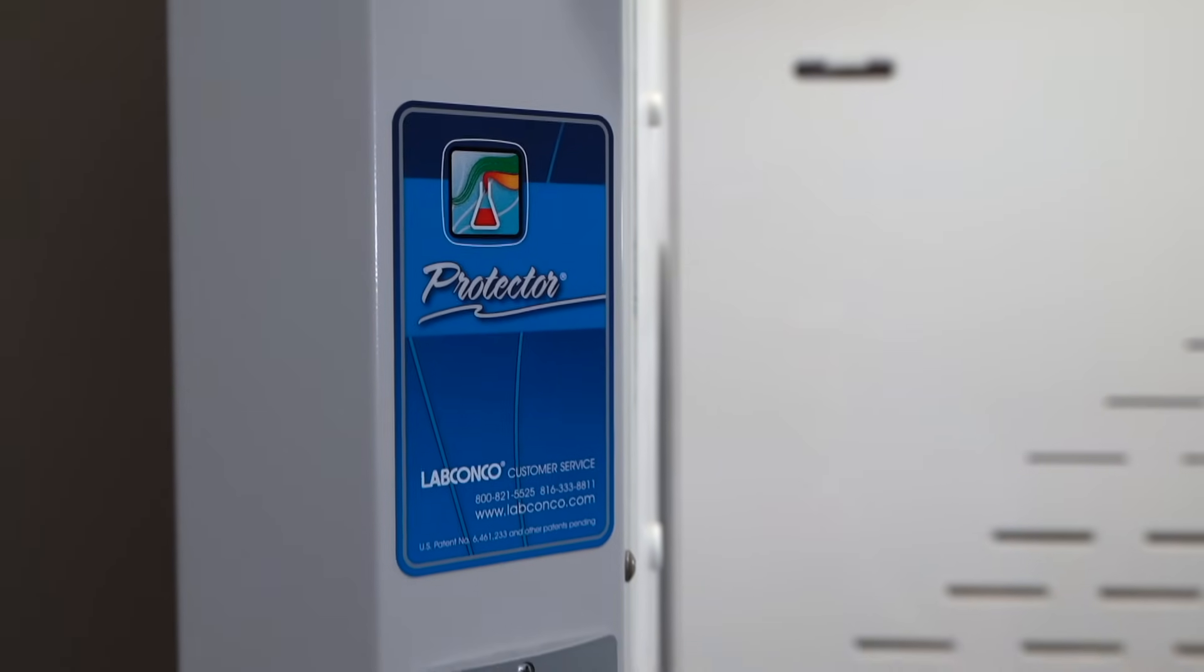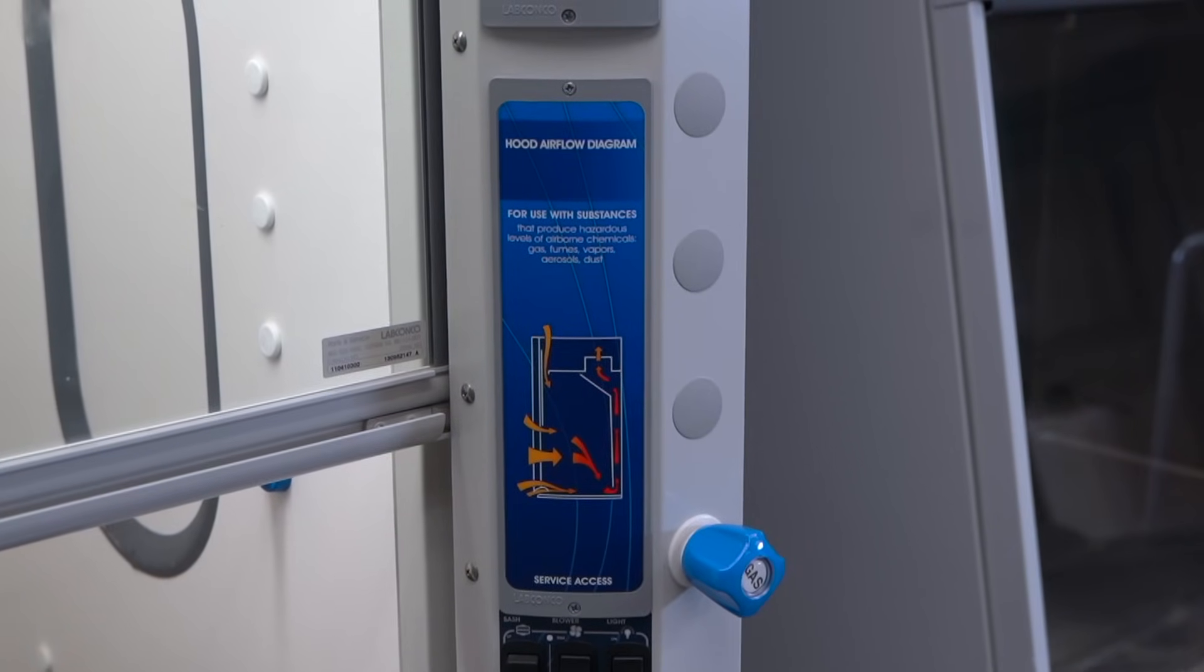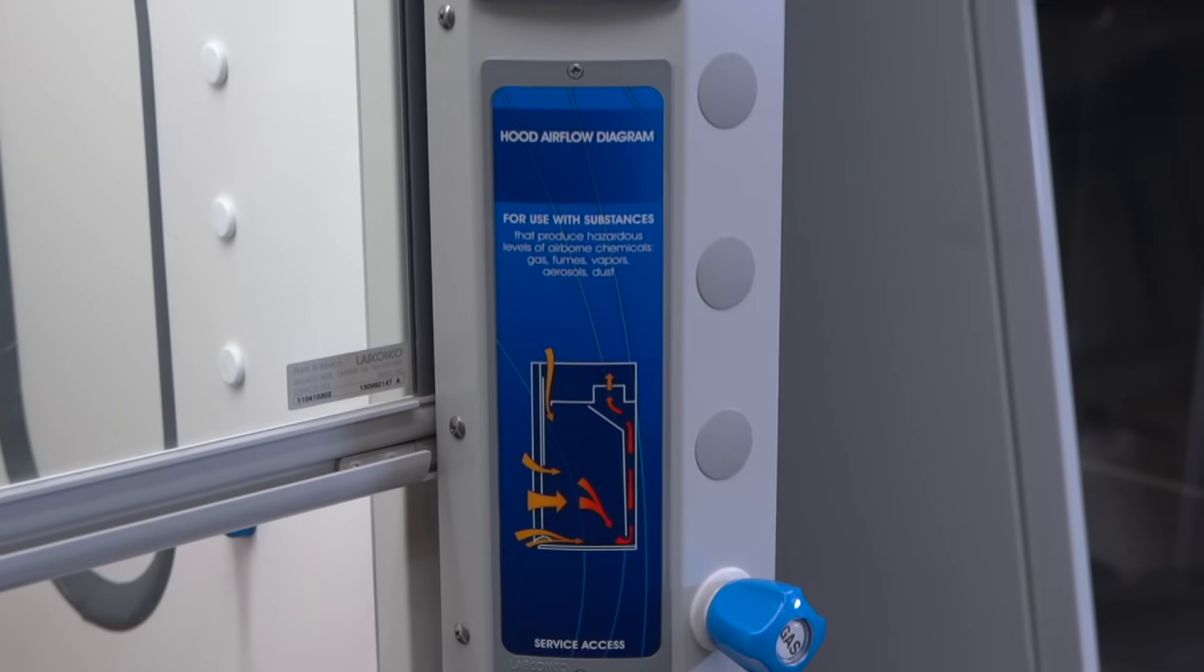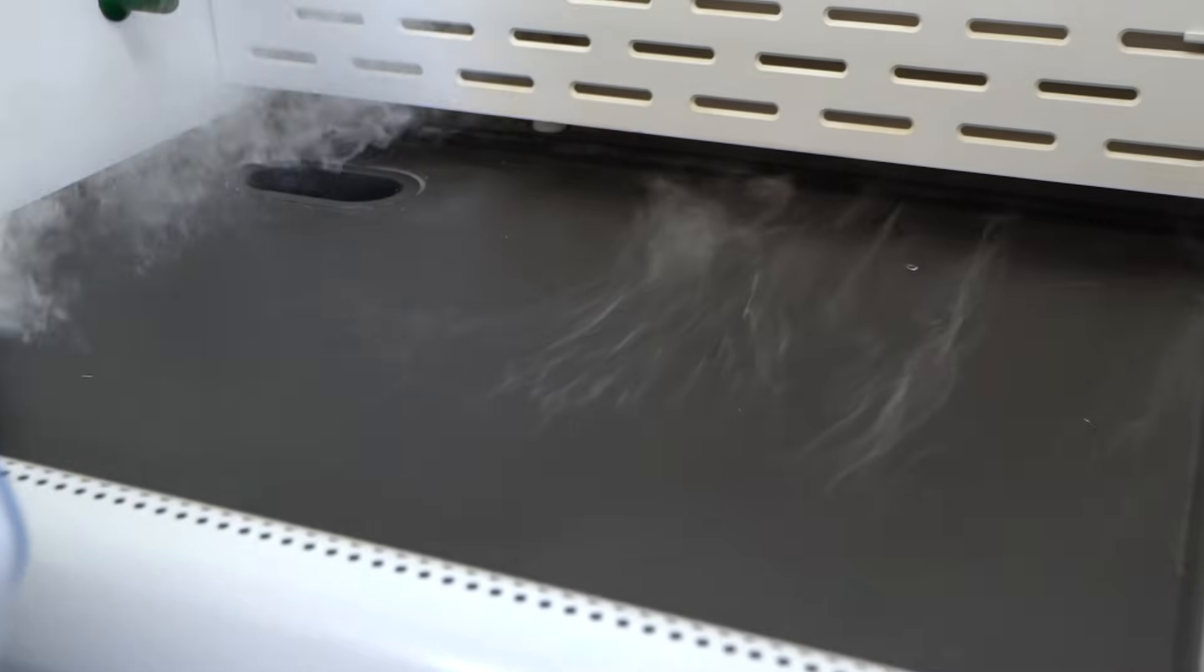Your fume hood is your laboratory's primary safety device for containing chemical fumes and vapors. Air flows into the hood to contain contaminants. Contaminated air is exhausted through a dedicated ventilation system.